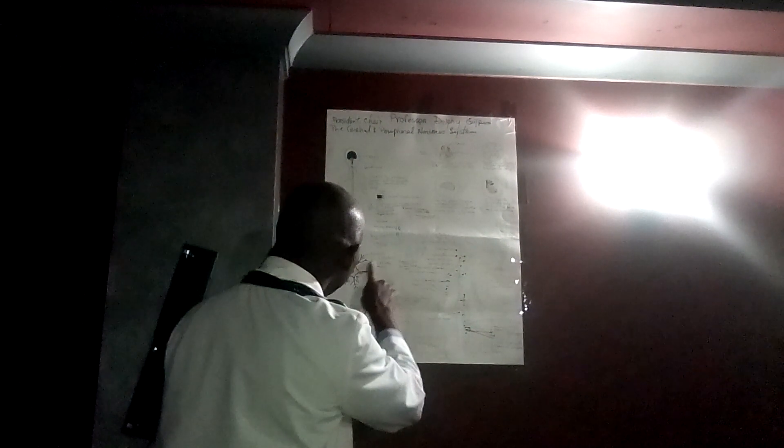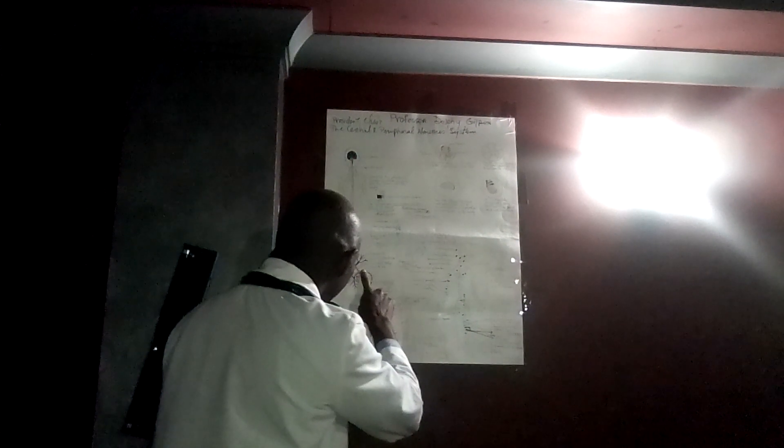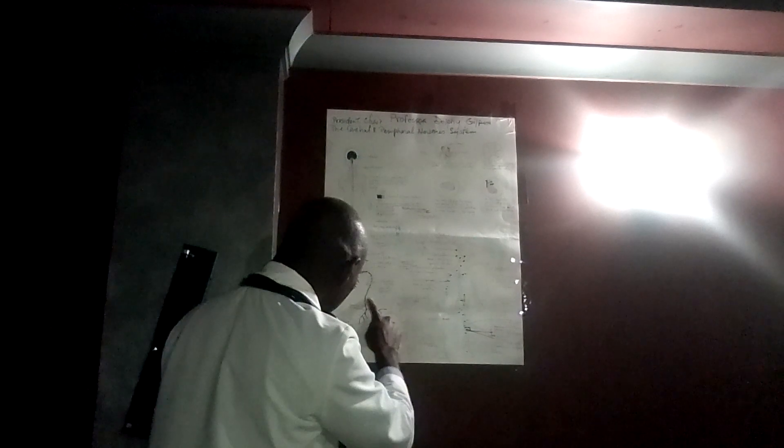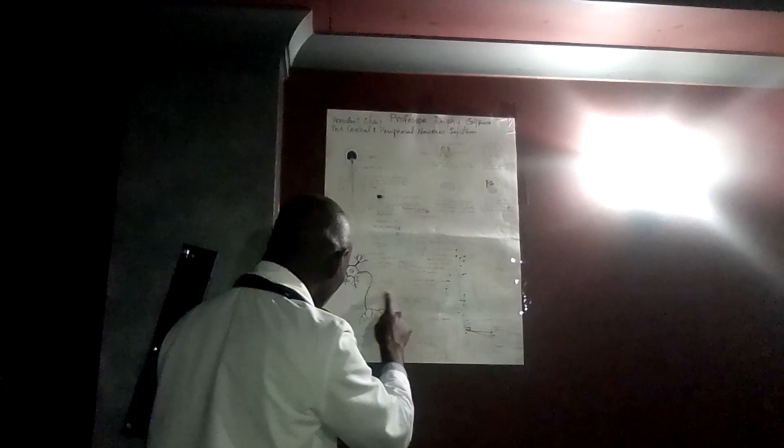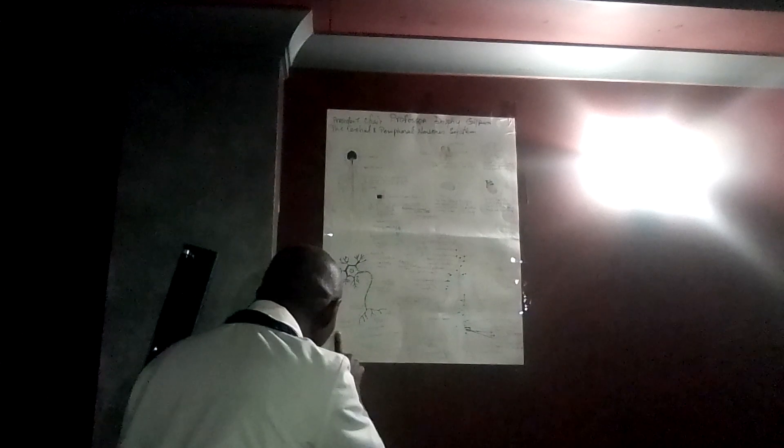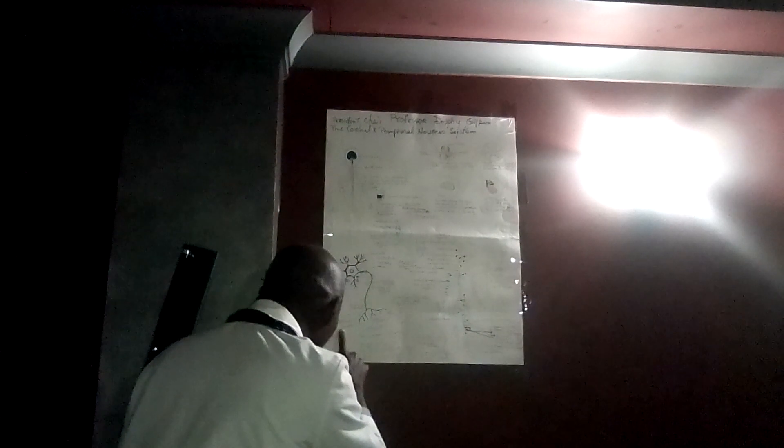This is a diagram of the motor neurons, showing the dendrites, the cell body, the axon, the myelin sheath, the node of Ranvier, and so on — the axon and the synapse.